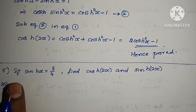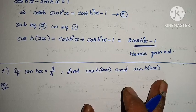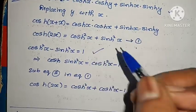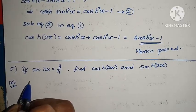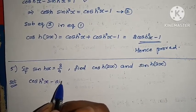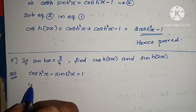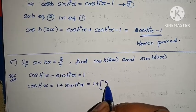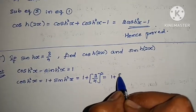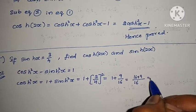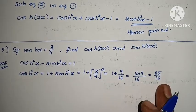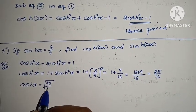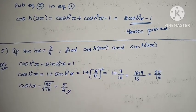Next problem: If sinh(x) = 3/4, find cosh(2x) and sinh(2x). First, we need cosh(x). Using the hyperbolic identity: cosh²(x) − sinh²(x) = 1, so cosh²(x) = 1 + sinh²(x) = 1 + (3/4)² = 1 + 9/16 = 25/16. Therefore cosh(x) = 5/4.